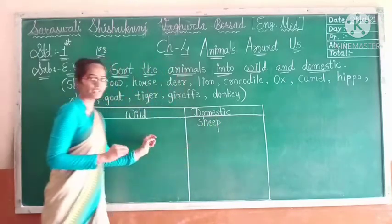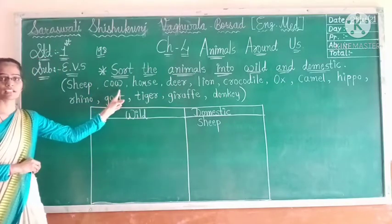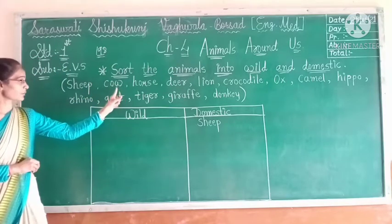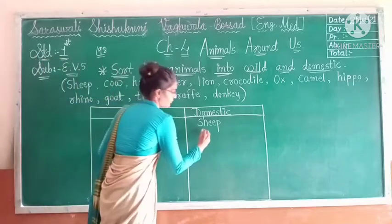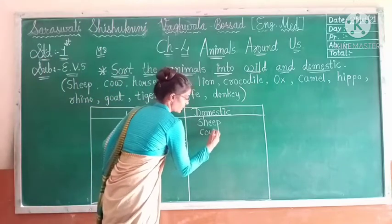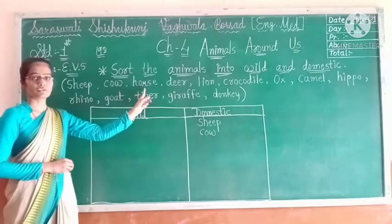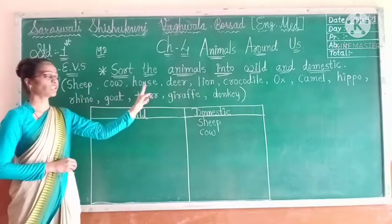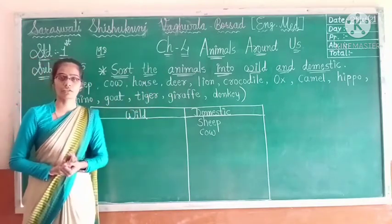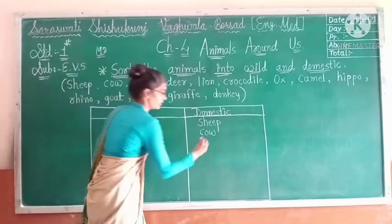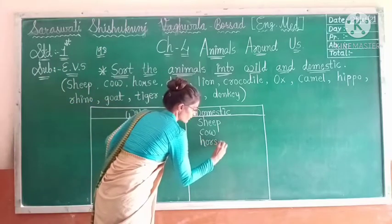In the same way, the second animal is cow. Cow is also a domestic animal, so we will write it here. Then after that is horse. Horse is also called a domestic animal, so we will write horse here under domestic.